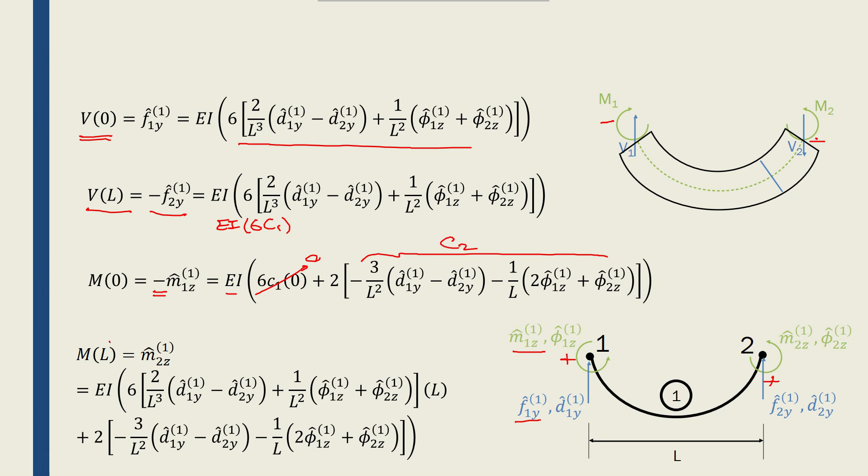Now, if I put L instead of x in that equation, M(L) becomes EI times 6c1L plus 2c2. And because here m2 is positive, because it's counterclockwise, and m2 is positive here as well, we have the positive sign.